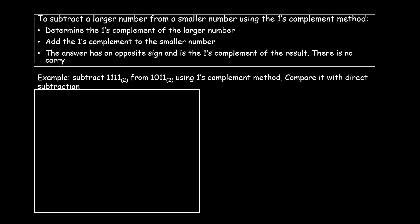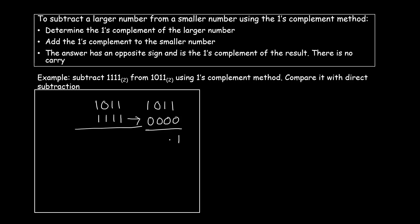Let's look at another example: subtract 1111 from 1011. So from 1011 we need to subtract 1111. The first step is to determine the one's complement of the larger number, which is the second number. The one's complement of 1111 is 0000. I add it with the first number as it is: 1+0=1, 1+0=1, 0+0=0, 1+0=1.